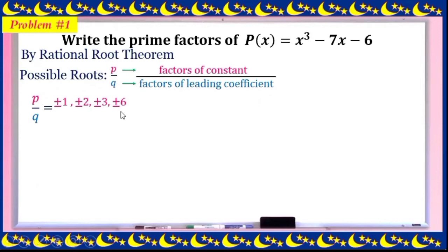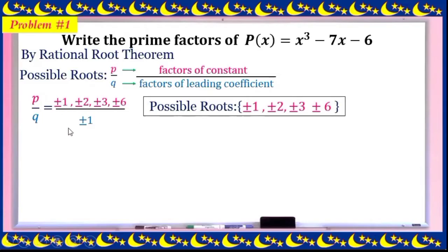For q, we use the leading coefficient — the coefficient of the term with the highest exponent of x. Here the leading coefficient is 1, so q is positive or negative 1 only. If we simplify p over q, dividing by positive or negative 1 gives us the same values: 1, 2, 3, and 6, all positive and negative.